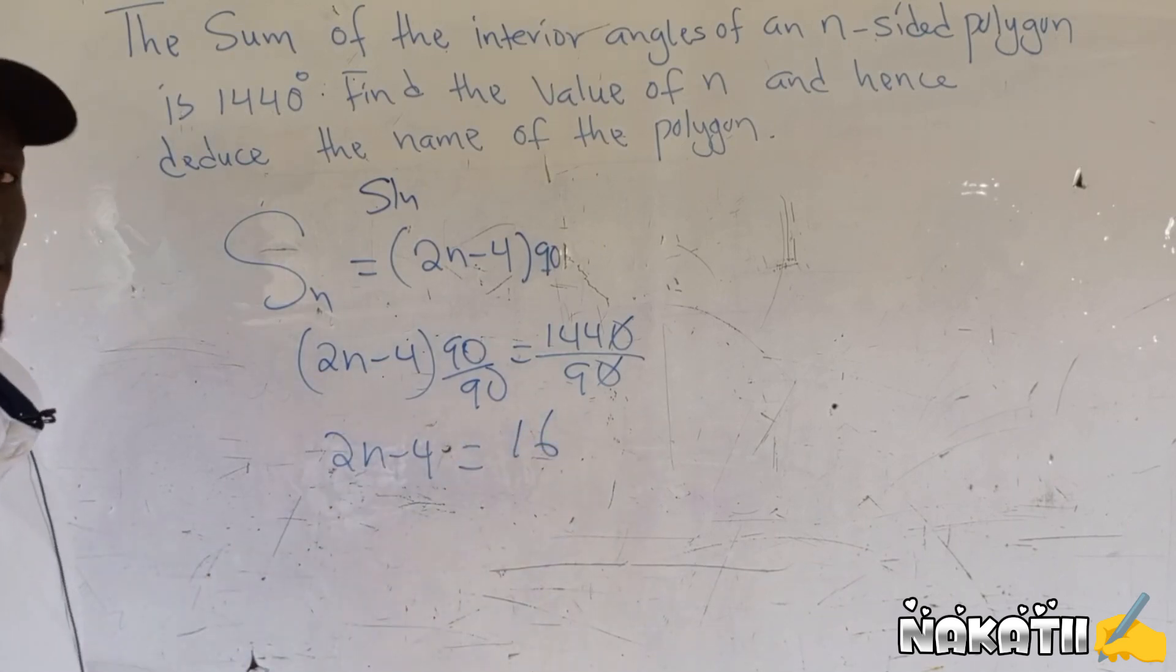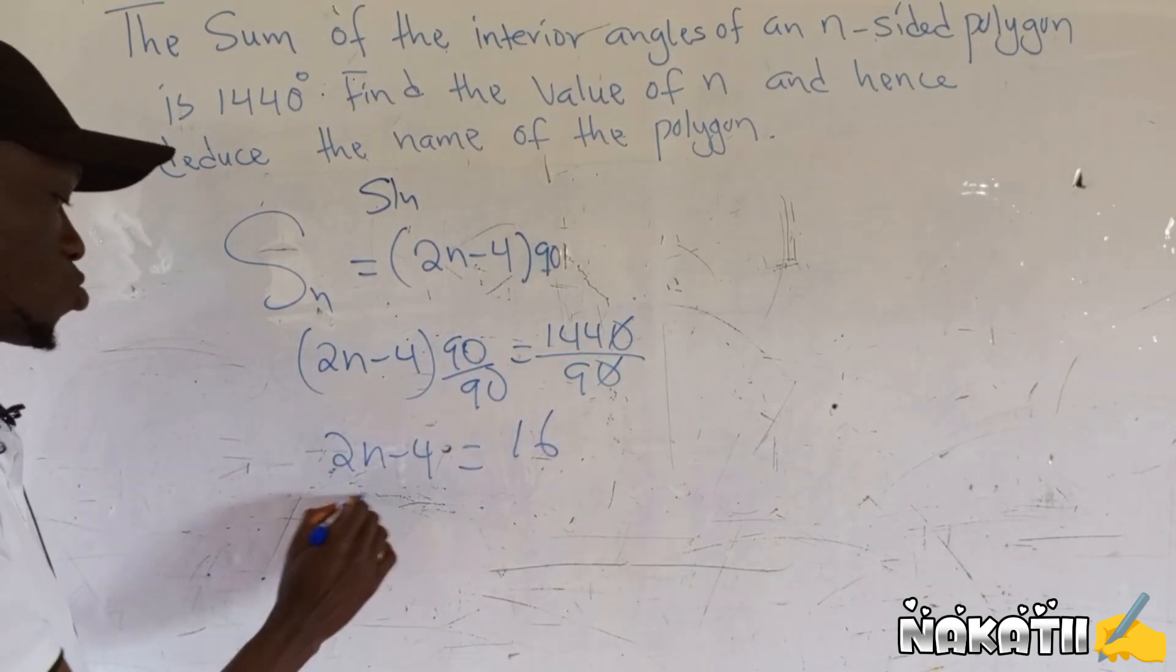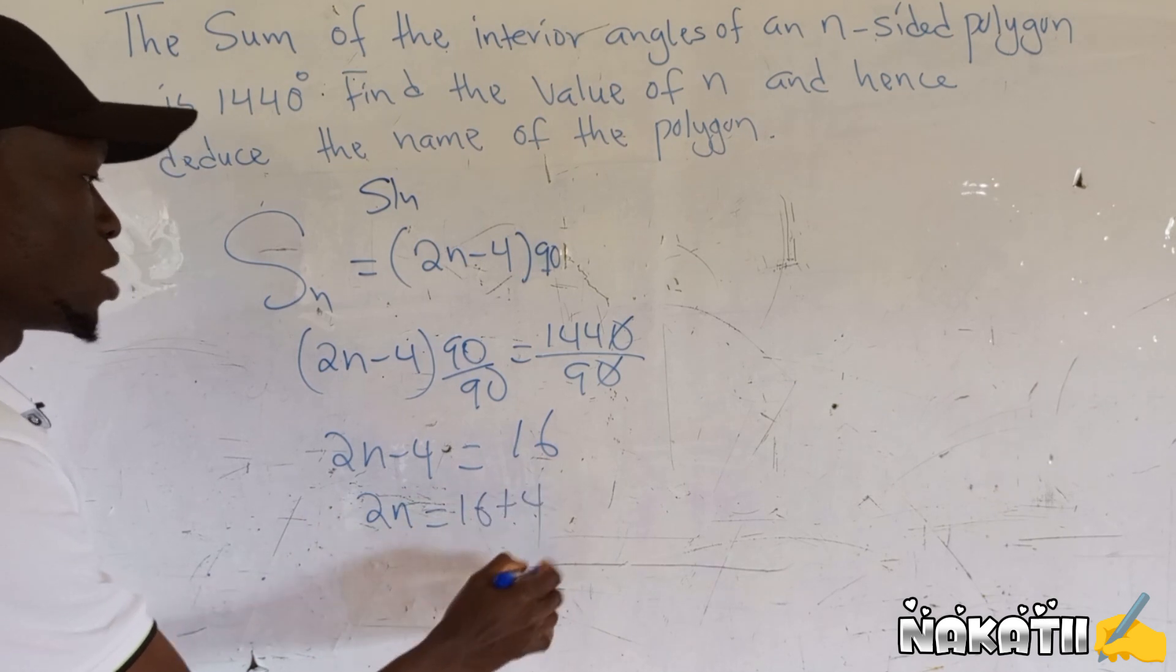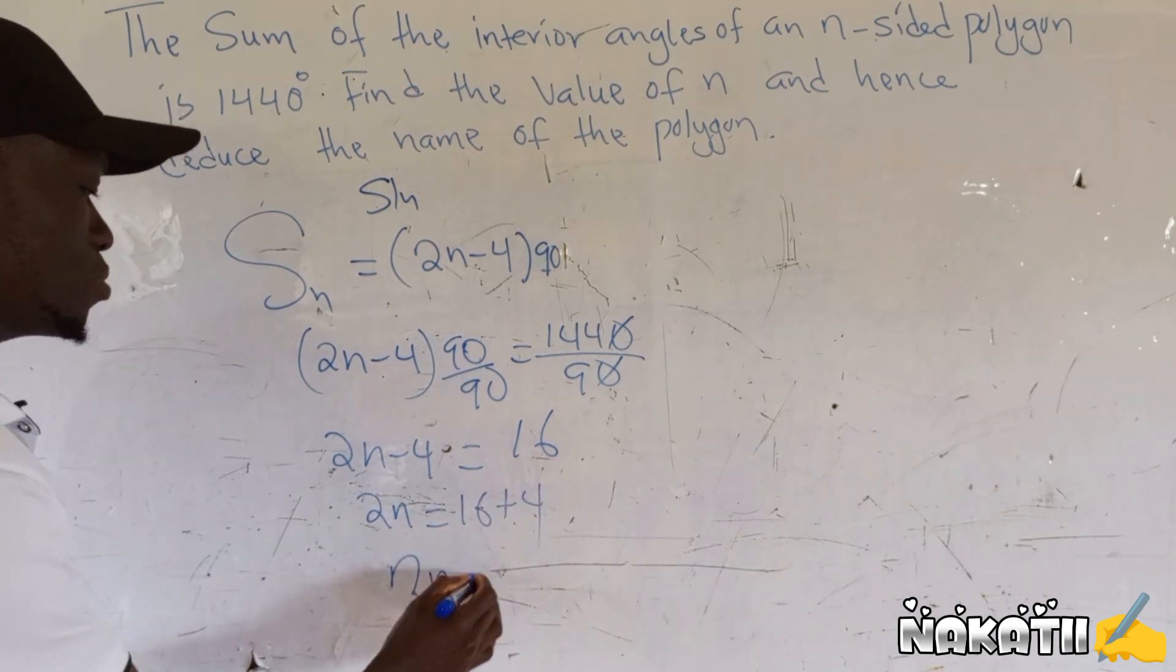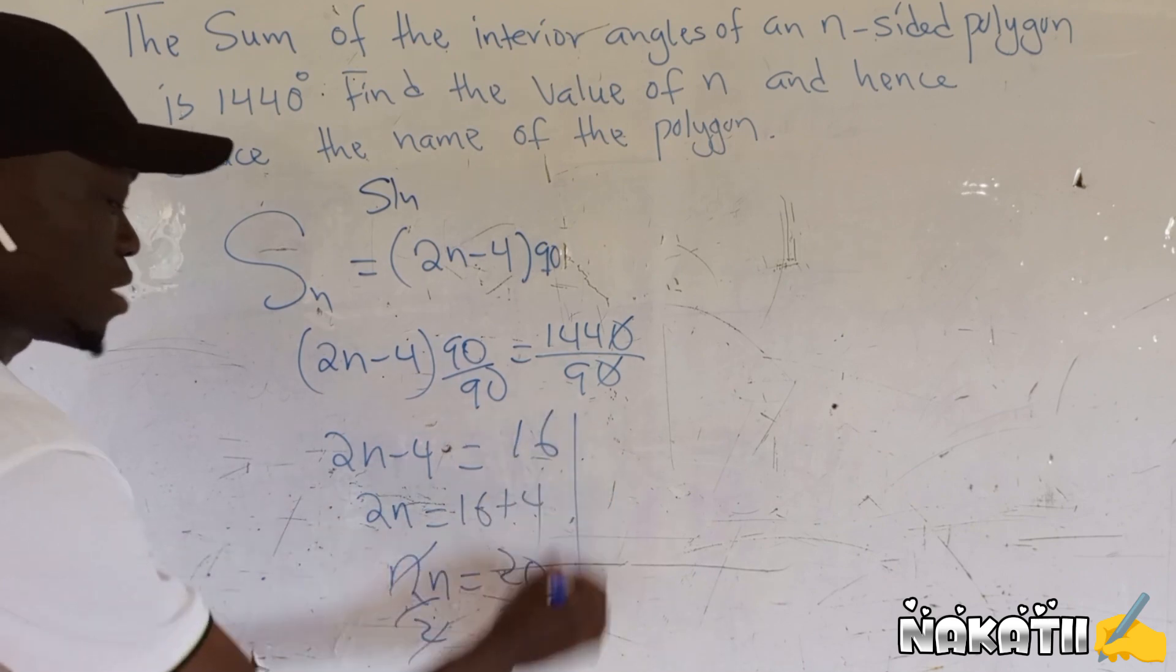Then we take this 4 to the other side. We're going to have 2n equals 16 plus 4, and our 2n will be equals to 20. Divide this side by 2 by 2, hence our n will be equals to 10.